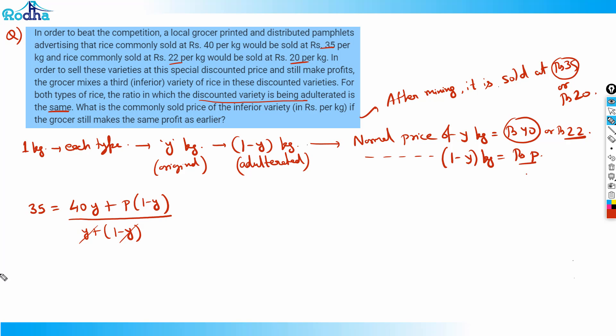From here I'll get an equation between p and y. I can write 40y plus p times (1-y) divided by 1 is 35. So I can write my first equation as 40y plus p(1-y) equals 35. That would be my equation number one.